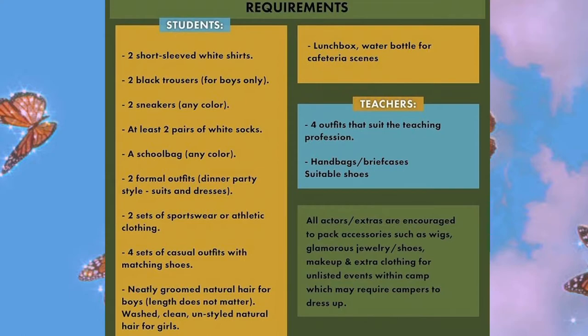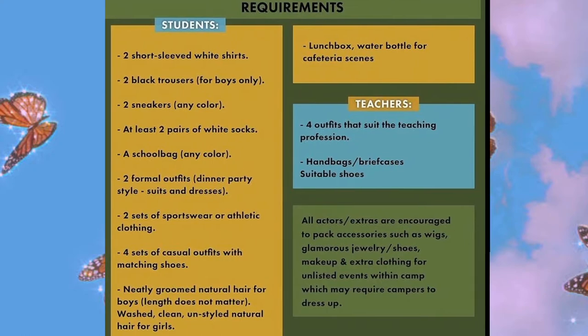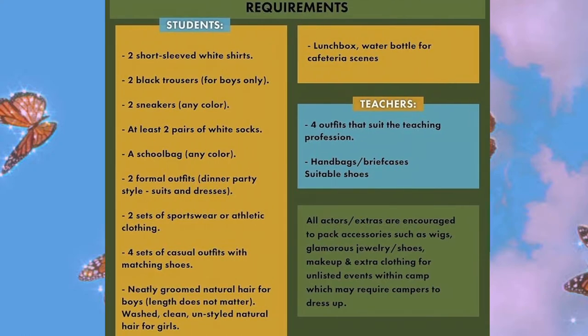Also pack a school bag in any color, two formal outfits in dinner party style such as suits and dresses, two sets of sportswear or athletic clothing, four sets of casual outfits with matching shoes, neatly groomed natural hair for boys — length does not really matter — and washed, clean, unstyled natural hair for the girls. Extra requirements include a lunch box and water bottle for cafeteria scenes.